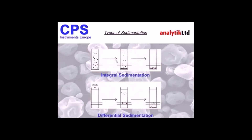The initial intensity of this source reading at the detector will be low. But as particles settle — big ones settling first, smaller ones settling later — the concentration of this dispersion will fall and the intensity of the source reaching the detector will increase. The result of this analysis will give you an integral plot, because the sum of all the particles smaller than a particular size is being continuously measured during the analysis.